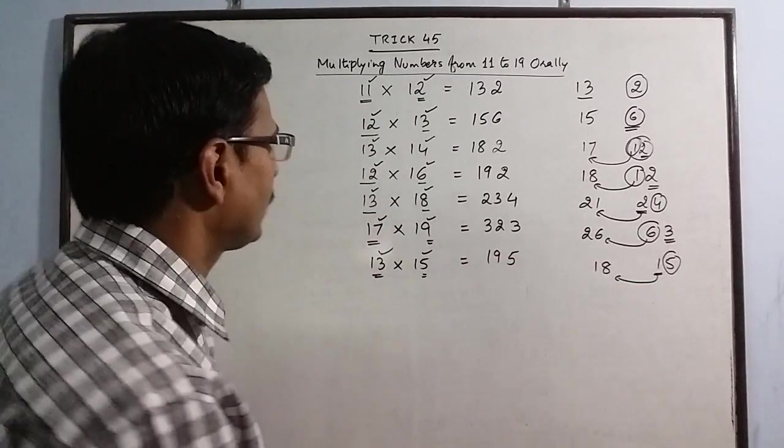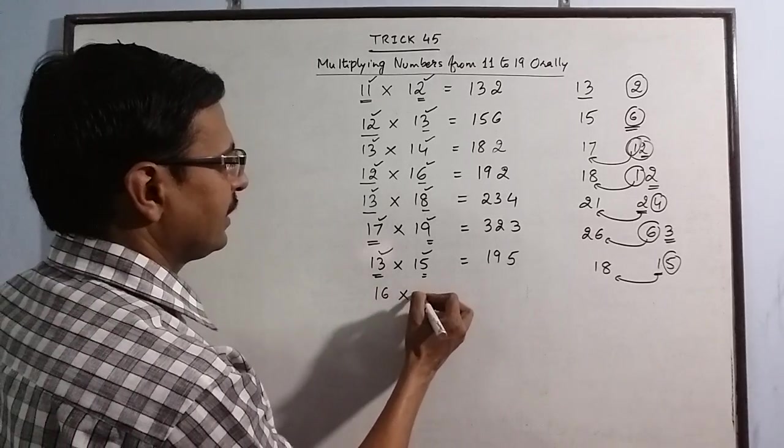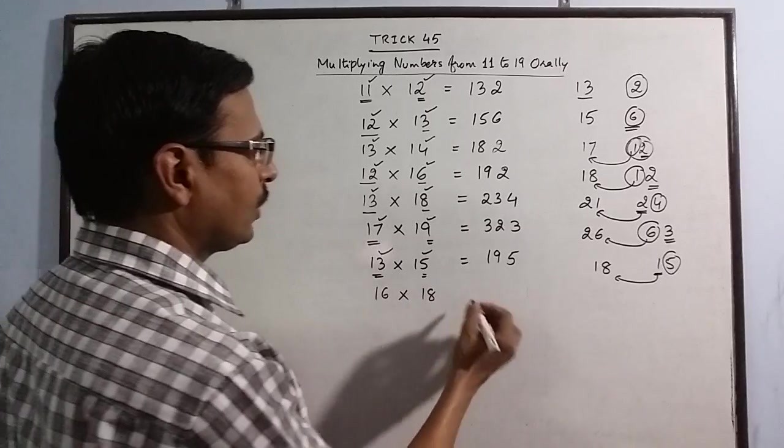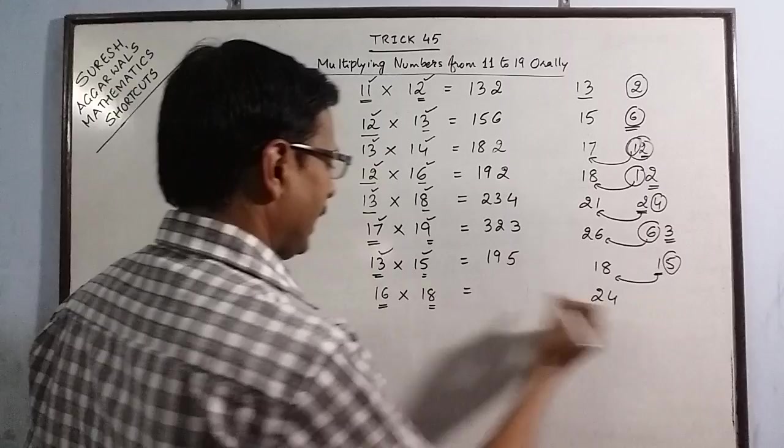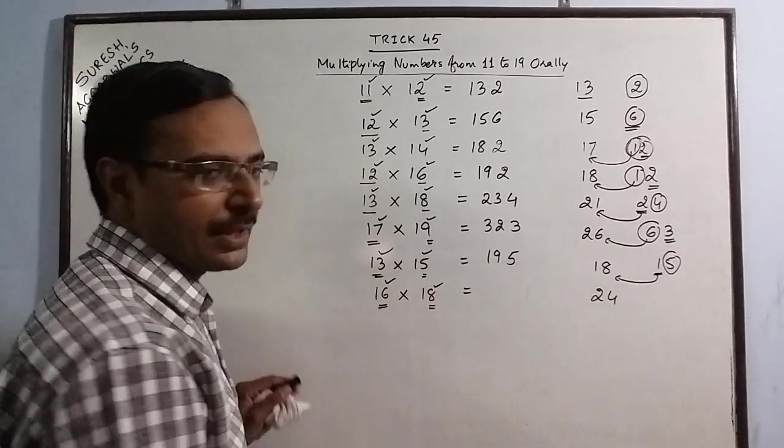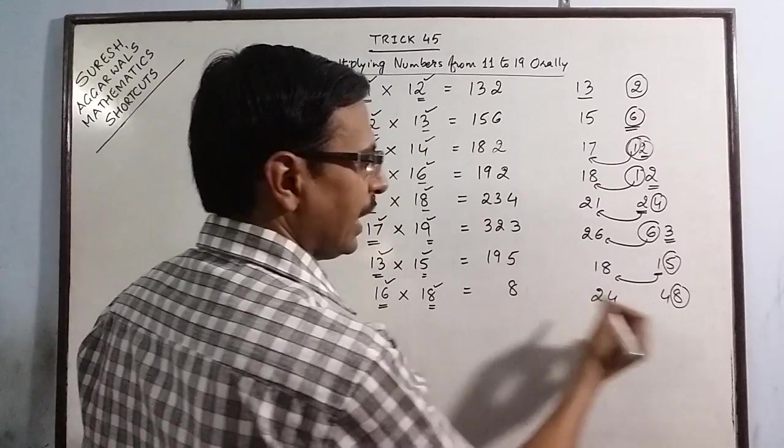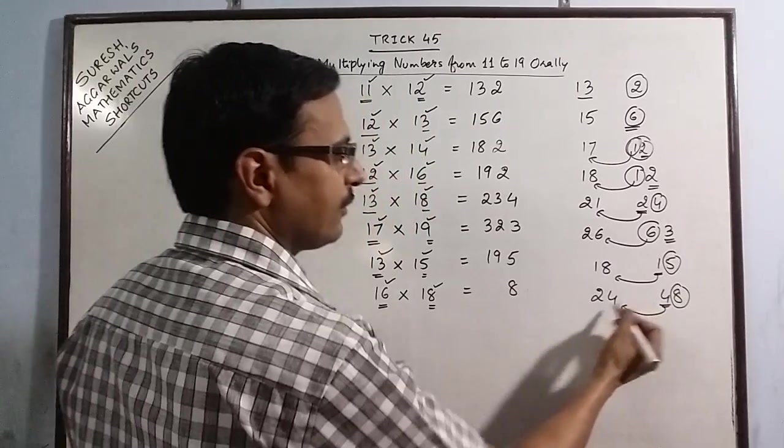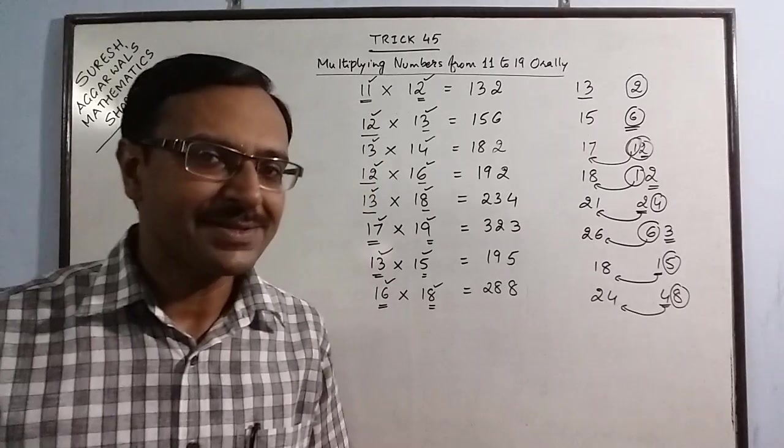And the final example which I am going to take is 16 into say 18. Now 16 plus 8 is 24 and 6 into 8, 8 is the 48. So we retain it as it is and this 4 is to be added here. 24 plus 4 becomes 28. So 288 is the product. It is as simple as that.